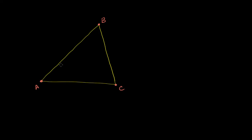So let's bisect angle BAC right over here. Let me draw an angle bisector — I want to make sure I get that angle right in two. That looks pretty close, so that's the angle bisector. Let me call this point D. Then let me draw another angle bisector, the one that bisects angle ABC, which might look something like that. I could call this point E.